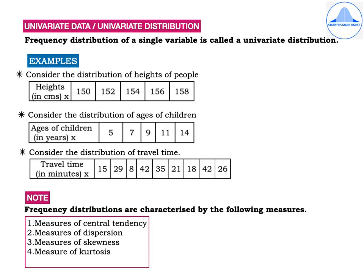Let us first learn what is a univariate data or what is a univariate distribution. A frequency distribution of a single variable is called as a univariate distribution or univariate data.